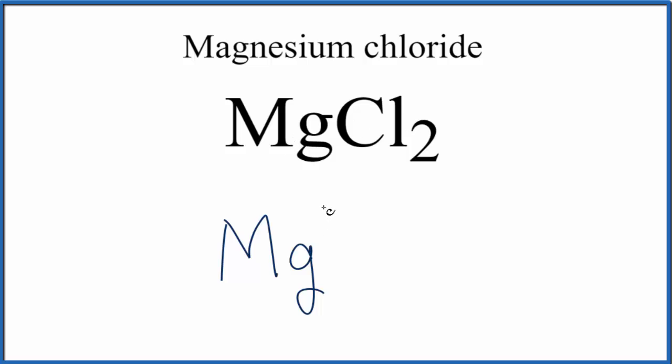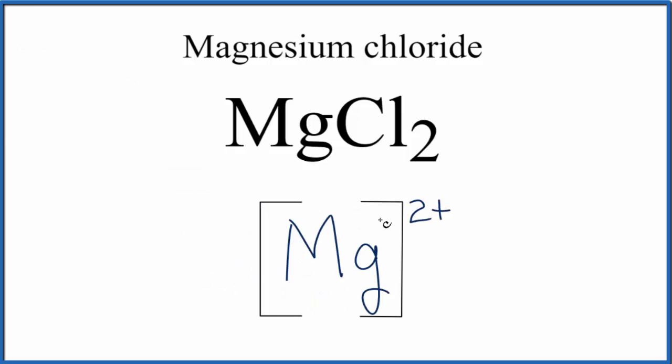When it does that, it's lost two negative charges. It becomes more positive, so it becomes 2+. What we can do now to make this the correct Lewis structure is put brackets around the Mg. That's the first part of our Lewis structure. We have our metal here.